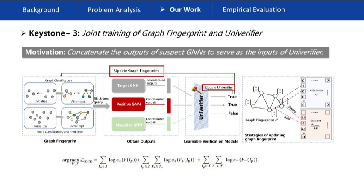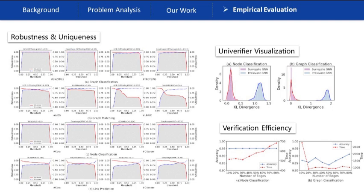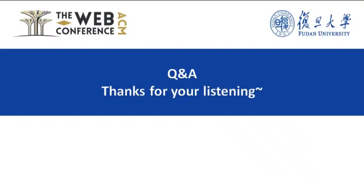Specifically, the suspect GNN takes the graph fingerprint as inputs, of which the outputs will be concatenated. After this, the concatenated outputs will be fed to the verifier to determine whether the suspect GNN is the pirated one or irrelevant one. In experiments, we compare GNN-Effingers with traditional fingerprinting approaches. We also present the uniqueness and robustness of GNN-Effingers. Thank you for listening.